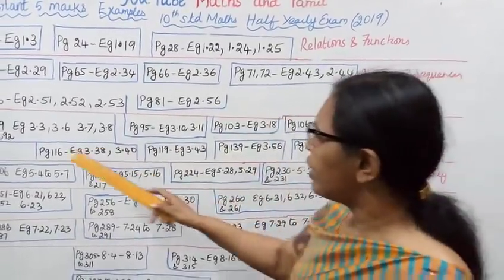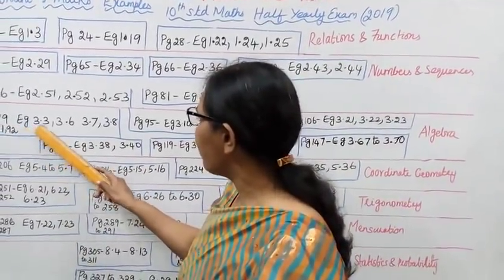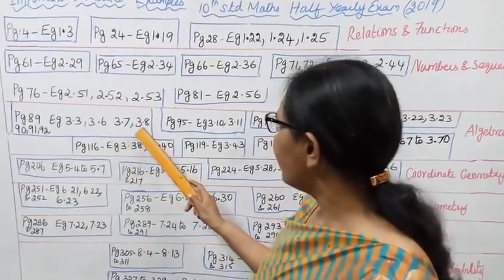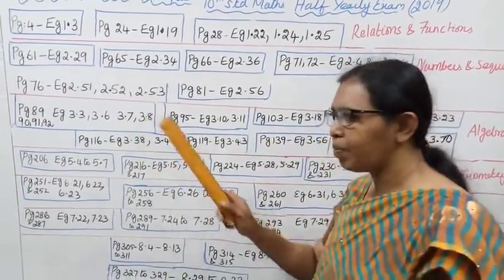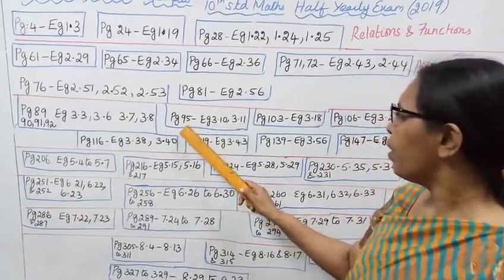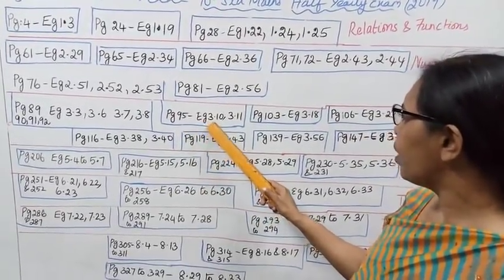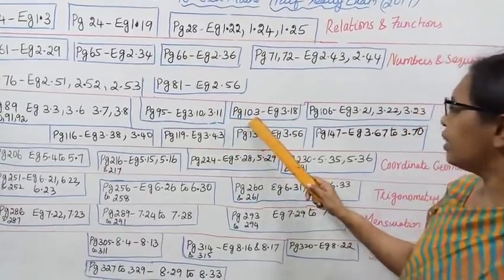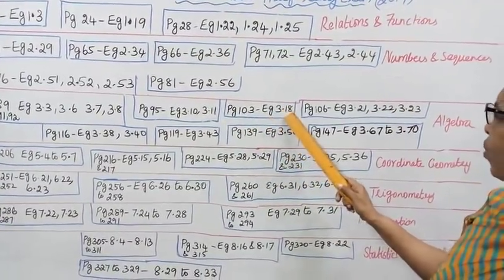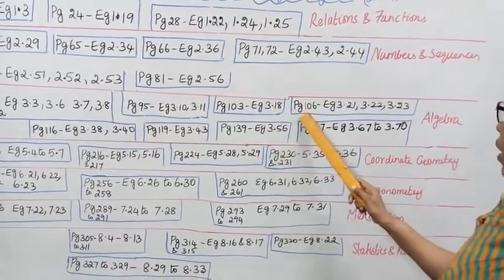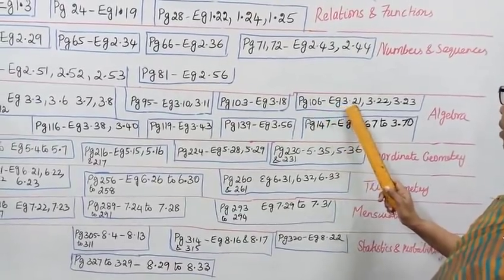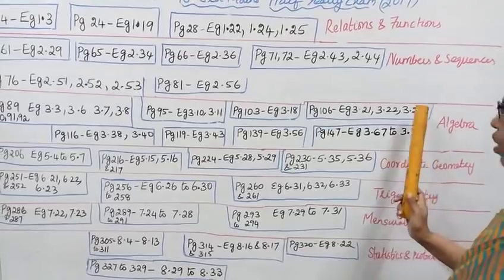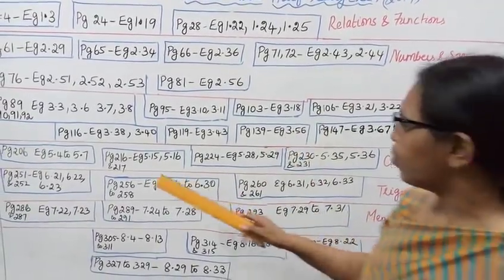Algebra: examples 3.6, 3.7, 3.8; example 3.21, 3.23, 3.11; page 103, example 3.18; page 106, example 3.21, 3.22, 3.23 — these are important sums.